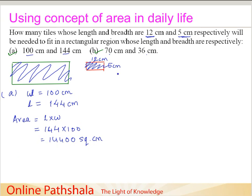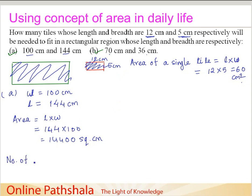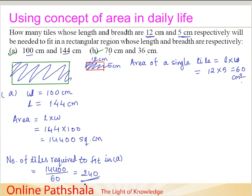The area of a single tile equals length times width, which is 12 times 5, giving 60 square cm. Therefore, the number of tiles required to fit region A equals 14,400 divided by 60, which gives us 240 tiles. So we need to get 240 such tiles to cover this region.